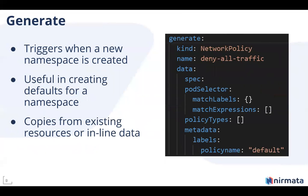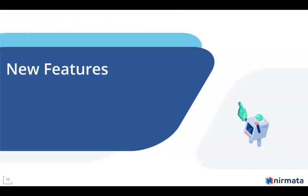Next is generate. The idea behind generators: you see a namespace being created, and I want to create a network policy. But this policy also checks for an existing resource. So when this policy is applied, you want to check whether this particular namespace already has a network policy called 'deny all traffic'. If it does, does it share the same metadata or not? That's what generate allows us to do.